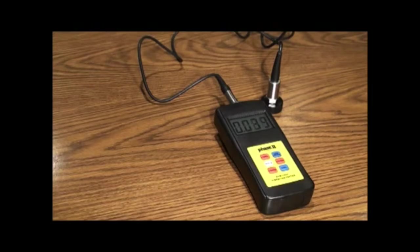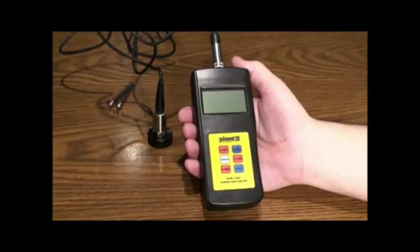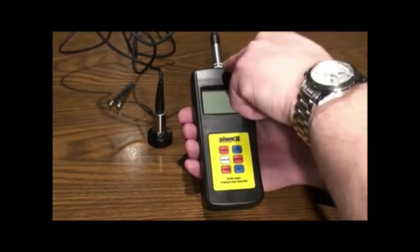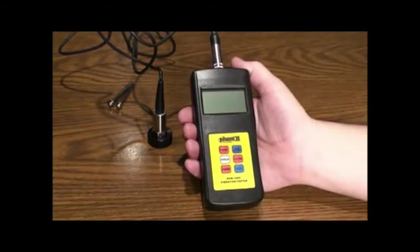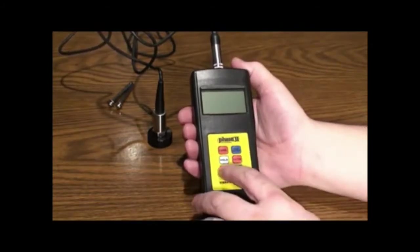Let's move to the operation of the vibration meter and see how easy it is to utilize the different functions, taking tests and obtaining results. To begin, attach the accelerometer probe to the meter. Press the power key to start and bring up the interface screen.